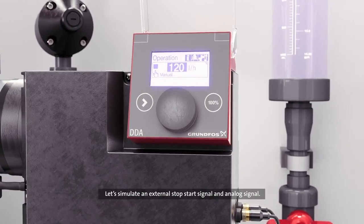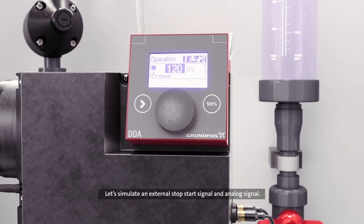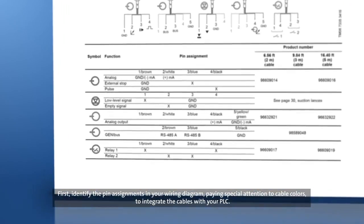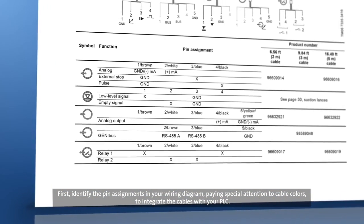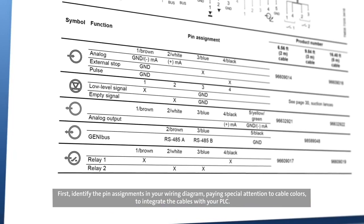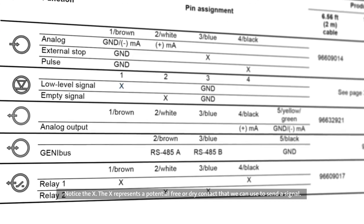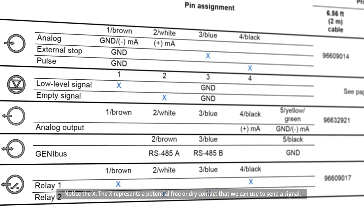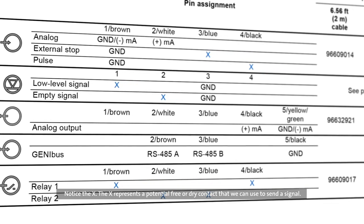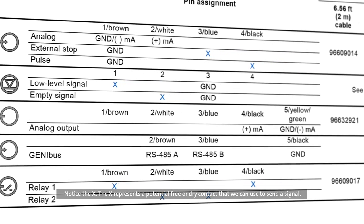Let's simulate an external stop start signal and analog signal. First, identify the pin assignments in your wiring diagram, paying special attention to cable colors to integrate the cables with your PLC. Notice the X. The X represents a potential free or dry contact that we can use to send a signal.